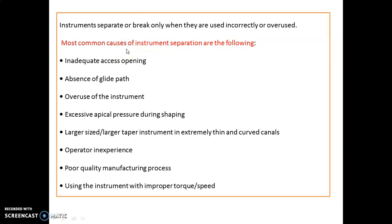The most common cause of instrument separation is inadequate access opening. Remember this sequence: inadequate access opening, absence of glide path, overuse of the instrument, excessive apical pressure during shaping, large size or larger taper instrument in extremely thin and curved canals, operator inexperience, poor quality manufacturing process, and using the instrument with improper torque and speed.